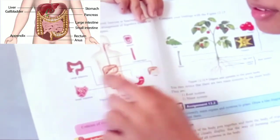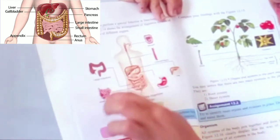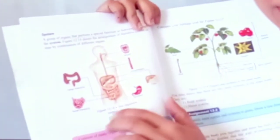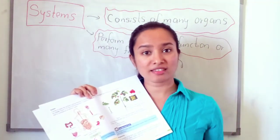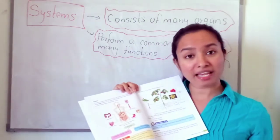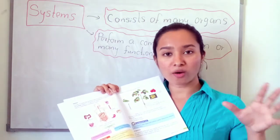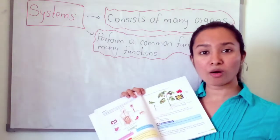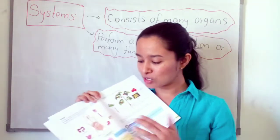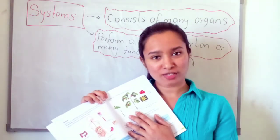Liver, stomach, large intestine, and small intestine are organs of the digestive system. All these organs work together. Likewise, the reproductive system, nervous system, and respiratory system each have many organs performing common or many functions. The food we intake is digested by the digestive system.